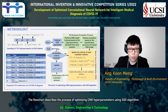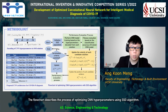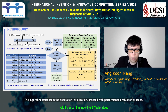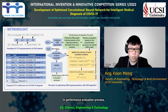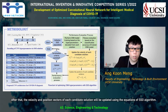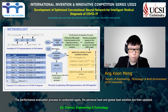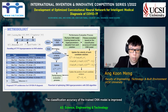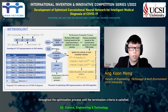The flowchart describes the process of optimizing CNN hyperparameters using the SSO algorithm. The algorithm starts from population initialization, then proceeds with the performance evaluation process. In the performance evaluation process, CNN model training is performed by decoding the hyperparameters from each solution. Fitness evaluation is then conducted to obtain the classification accuracy of the trained CNN model. After that, the velocity and position factors of each candidate solution are updated using the SSO algorithm equations. The personal best and global best solutions are then updated, and the classification accuracy is improved throughout the optimization process until the termination criteria is satisfied.